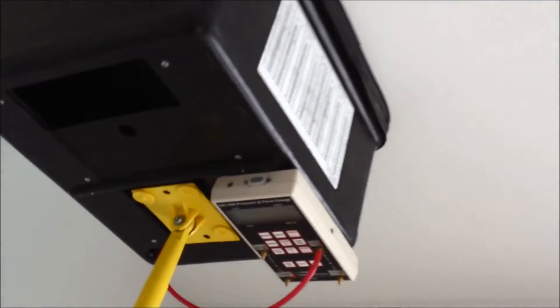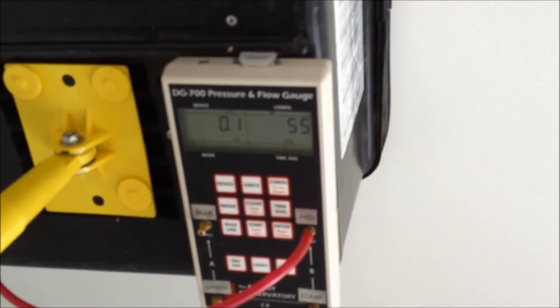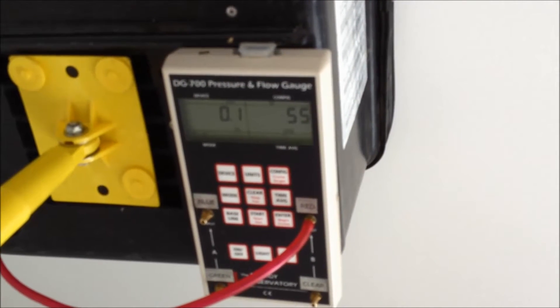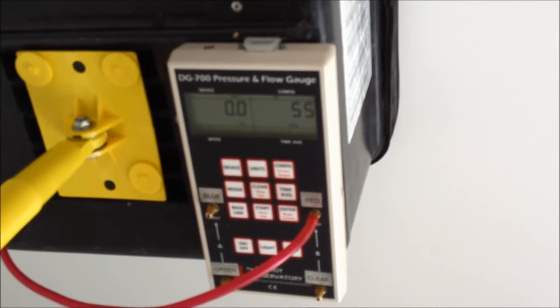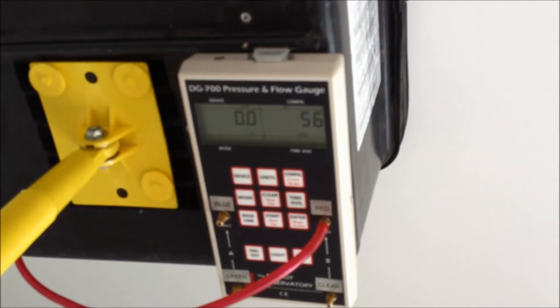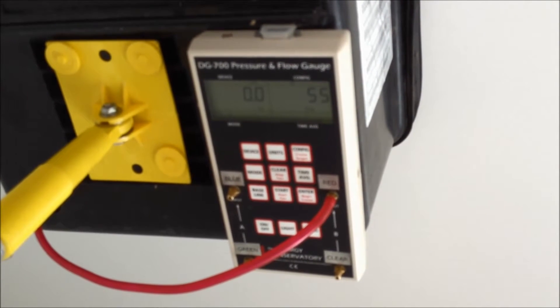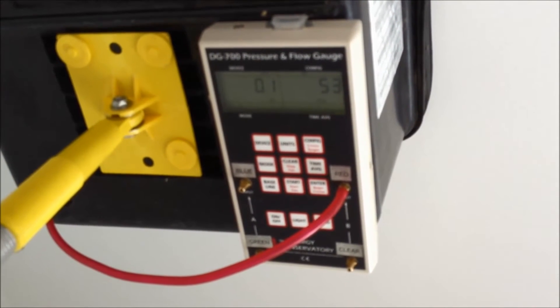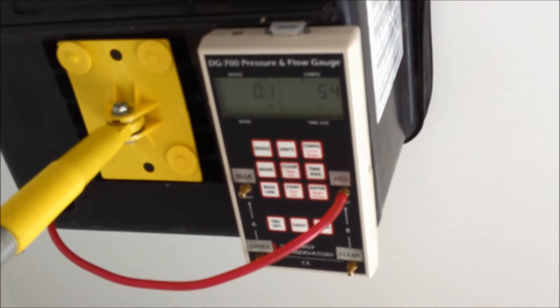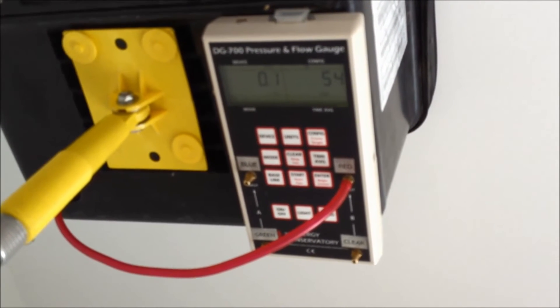If you come over here and look at the gauge, you can see we're at 54 CFMs, 55 CFMs. So this fan is working properly. Remember, Energy Star version 3 requires that a bathroom that has a shower or a tub in it has to be at least 50 CFMs. So this is probably a 75 or 80 CFM fan that is blowing at 50 to 54, which is normal.